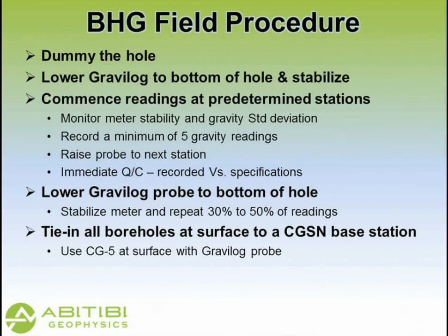The field procedure always starts by dummying the hole. Like any other gravity survey, you lower the meter to where it's going and let it settle for a while. Once you start taking readings, you're always raising it upwards so you have constant tension on the cable. You monitor the quality of the reading in real time, take repeat readings several times automatically, and move on. Like any gravity survey, you need to close loops to get repeatabilities. We lower the sensor to the bottom of the hole, let it settle, then repeat usually between 30 and 50 percent of the readings.